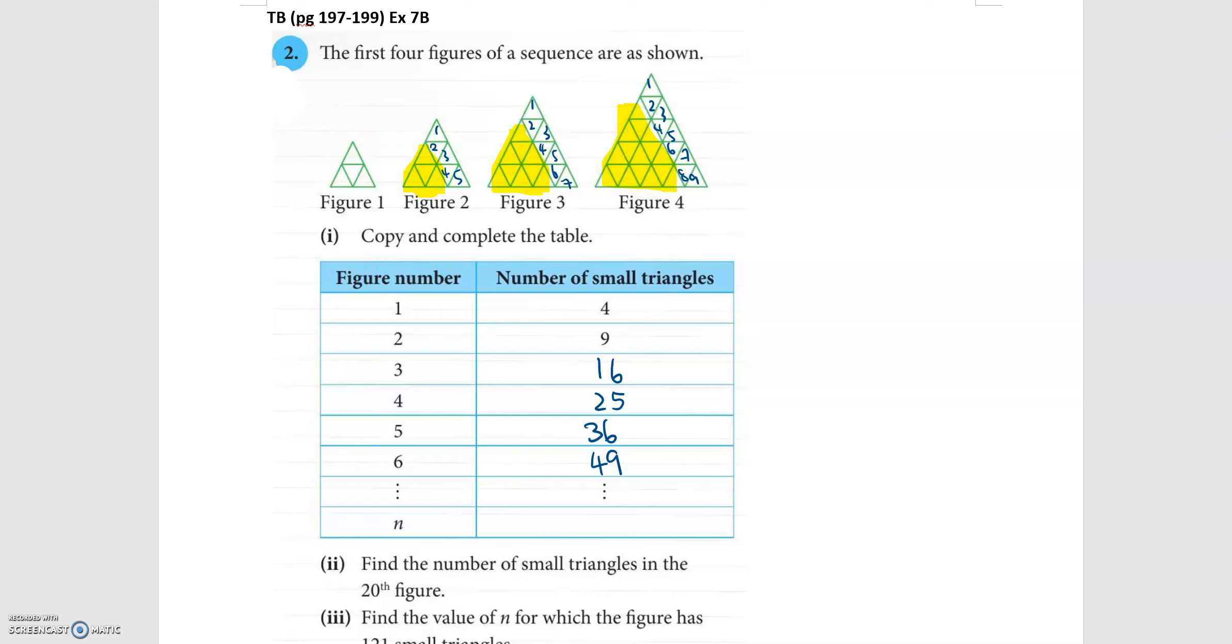So I have to link it. Okay so 4 is actually 2 squared. 9 is 3 squared. 16 is 4 squared. For figure number four is 5 squared and so on. Okay so I see the pattern. The figure number is one less than the number before I square it. So if I have figure n the number of small triangles will simply be n plus one squared.